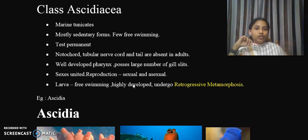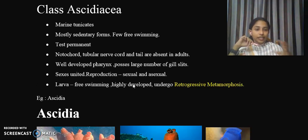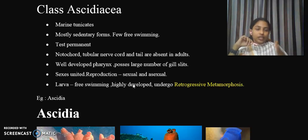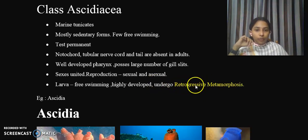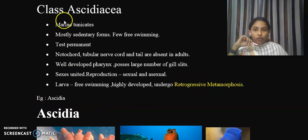This process is called retrogressive metamorphosis. Organisms — mainly the members of Class Ascidiacea — exhibit advanced characters in the larval stage, but as they progress toward adulthood these characters are lost. Such a character is called retrogressive metamorphosis, which is a very important point. An example is Ascidia, a member of Class Ascidiacea.